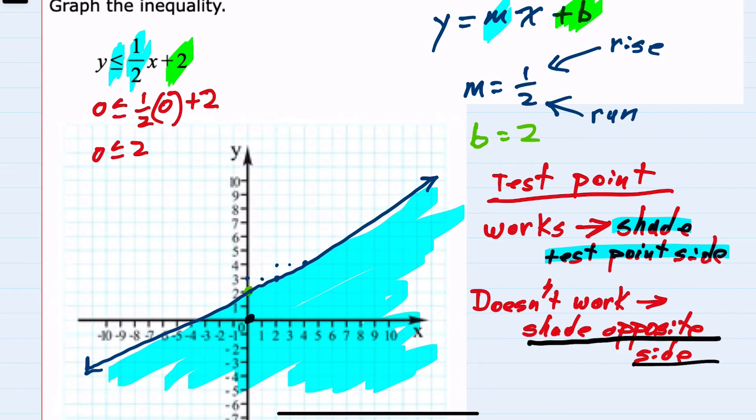And again, the important thing about the test point is that it is not on the line. Had the line gone through the point 0, 0, I would have had to choose a different test point, so that it wouldn't be on our line.